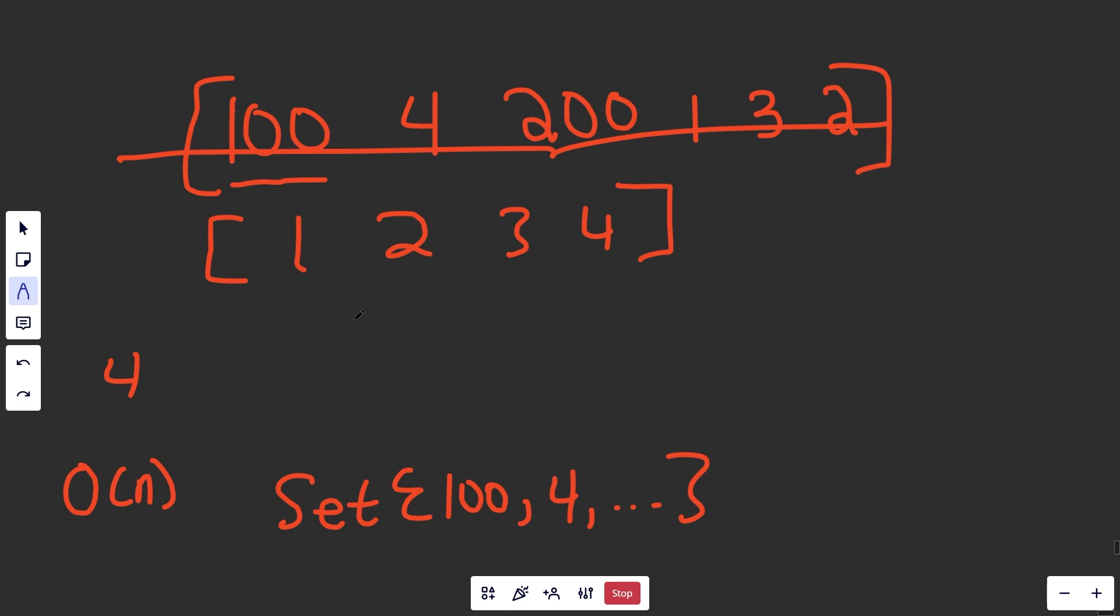That check right there, that stops this from being an O of n squared algorithm, and it makes it just O of n. We only do it for if you're starting a sequence, it's going to go up. But here, we'll go through the numbers, but it's not going to check anything. Neither are these guys.